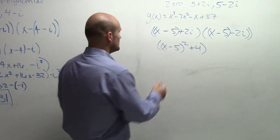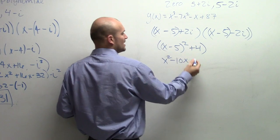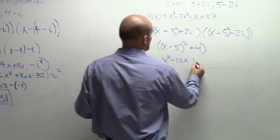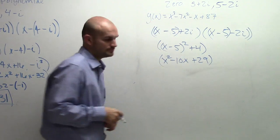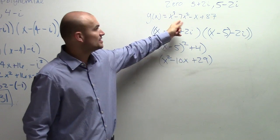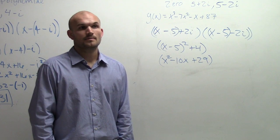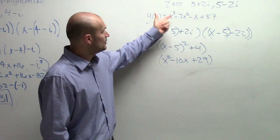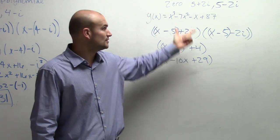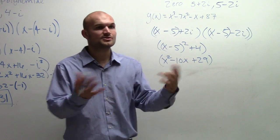So then I have (x minus 5) squared, which expands to x squared minus 10x plus 25, and plus 4 gives us plus 29. Now we can use this to perform long division on the polynomial, because I know that these two zeros both multiply together to give me this quadratic factor.